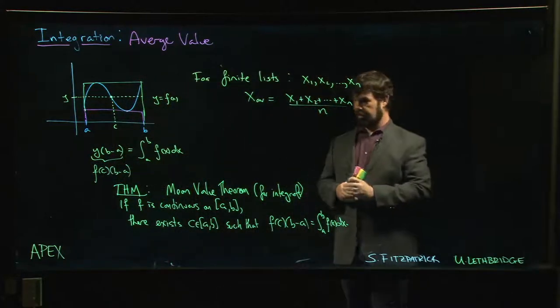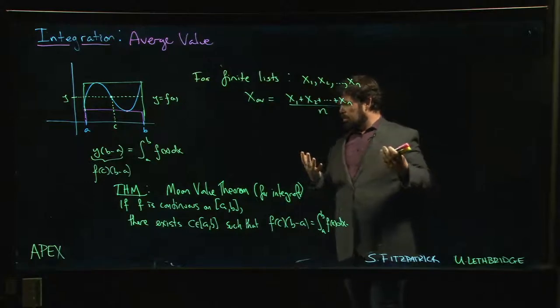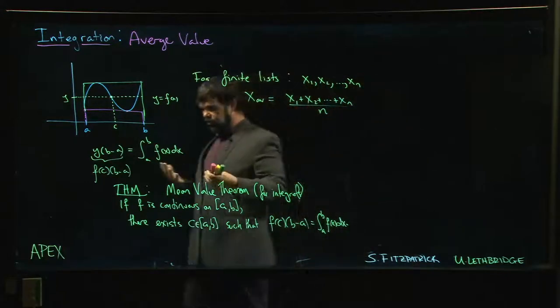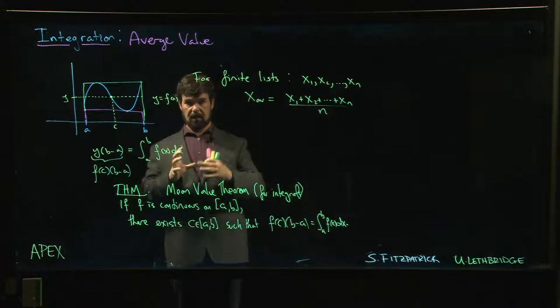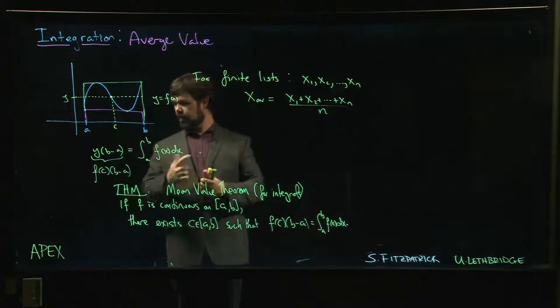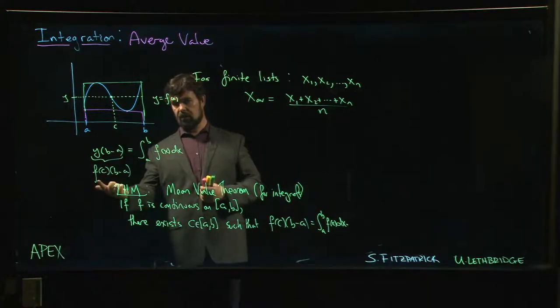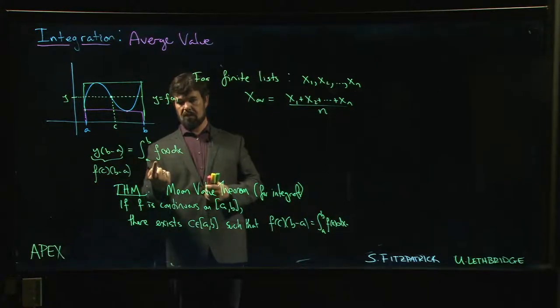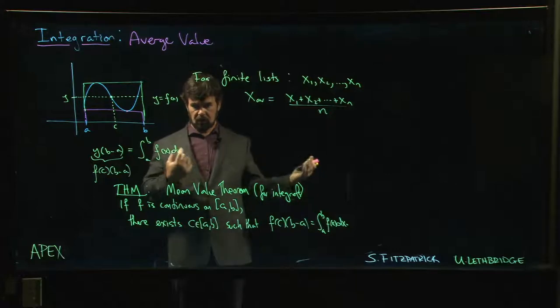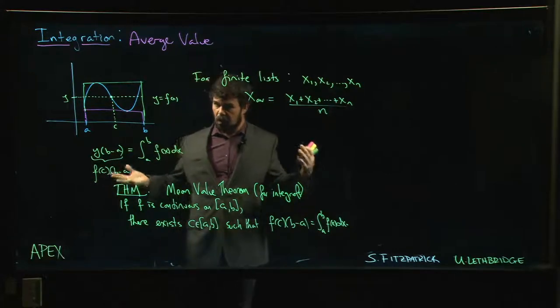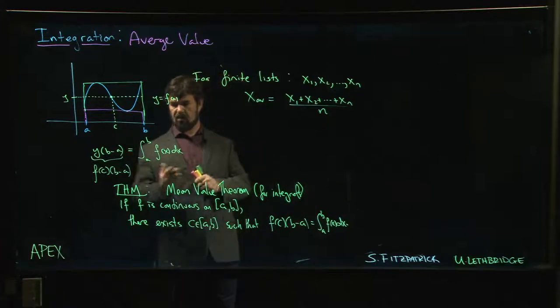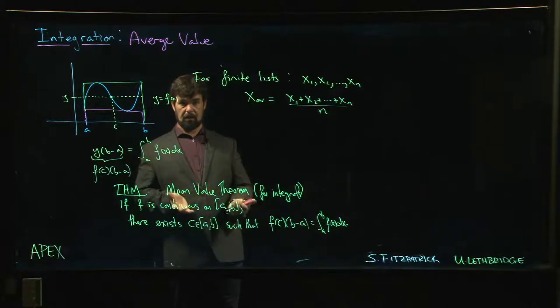It's going to say that there exists this c so that if you do big F at b minus big F at a, you're going to get big F prime at c times b minus a. But big F prime is just little f. This is big F at b; big F at a is zero. So it's the same mean value theorem as before, just applied to a function that's defined in terms of an integral. But it's useful in this context, so it's worth stating it as a separate theorem.